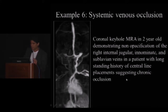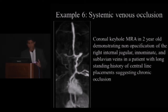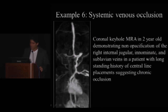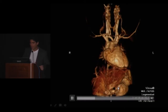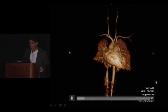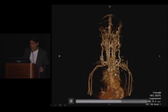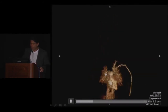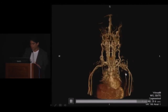My last example is systemic venous occlusion. Increasingly, we perform MR venography to look for central venous occlusion. Many young patients with congenital heart disease have a history of multiple catheterizations and central line placements, so a good roadmap of the central veins — particularly for stenosis and occlusion — is very helpful for clinical colleagues. In one patient, a two-year-old, there is non-opacification of the right internal jugular, innominate, and subclavian veins due to long-standing central line history. 3D datasets easily document these findings. In another case, the SVC is completely occluded with a collateral pathway network allowing blood to return to the peripheral venous system.